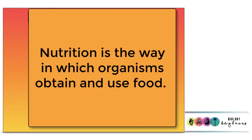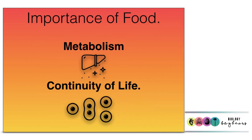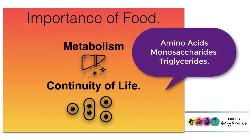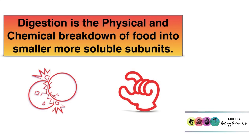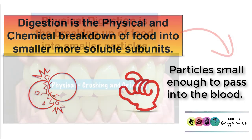Nutrition is all about the way in which organisms obtain and use their food. Food is of huge significance — it's necessary for fuelling metabolism and also essential for the provision of raw materials necessary to ensure continuity of life. For food to be usable, it needs to be physically and chemically broken down into smaller, more soluble subunits — smaller particles able to pass into the blood.